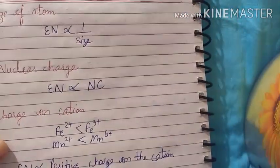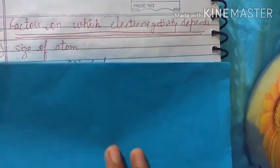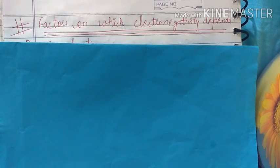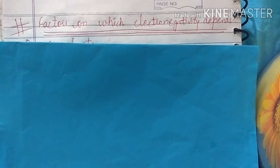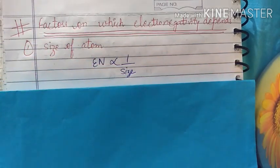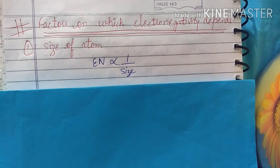So the factors on which electronegativity depends. The first factor is size of atom.